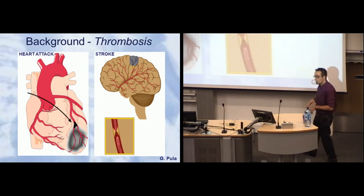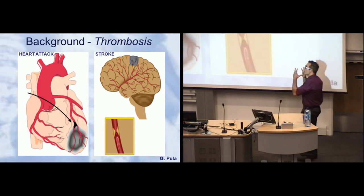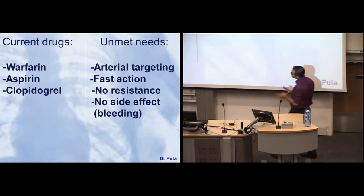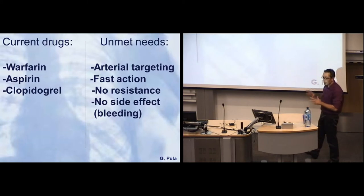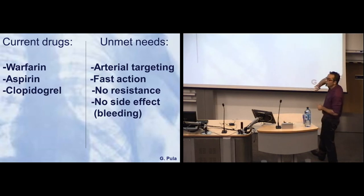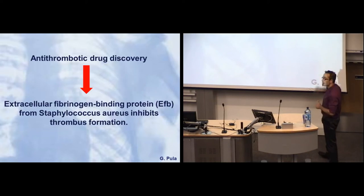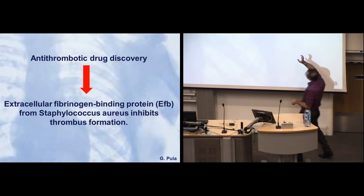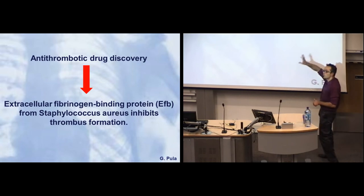We want to fight these. In the clinics at the moment, there are three main drugs to fight these diseases: warfarin, aspirin, and clopidogrel. They are not ideal because they are not very good at stopping clot formation in the arteries, they are not very fast-acting, and we tend to develop resistance or side effects like bleeding. Hence, we are still doing a lot of drug discovery for new drugs able to stop platelet activation.